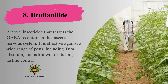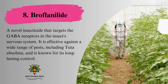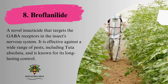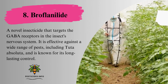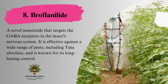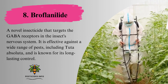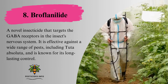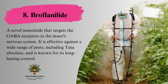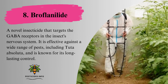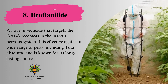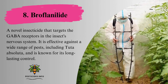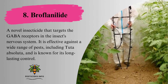8. Broflanilide, a novel insecticide that targets the GABA receptors in the insect's nervous system. It is effective against a wide range of pests, including Tuta absoluta, and is known for its long-lasting control.